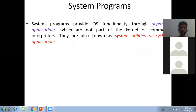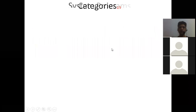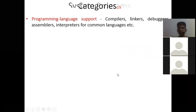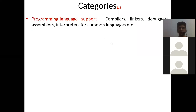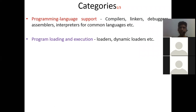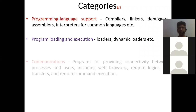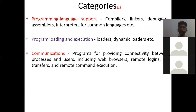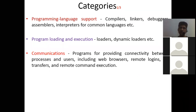There are different categories of system applications. The first is programming language support, which includes compilers, linkers, debuggers, assemblers, and interpreters for common languages. Then we have program loading and execution, including loaders and dynamic loaders. For communications, there are programs providing connectivity between processes and users, including web browsers, remote logins, file transfers, and remote command execution.